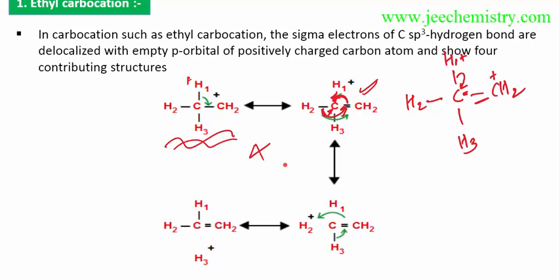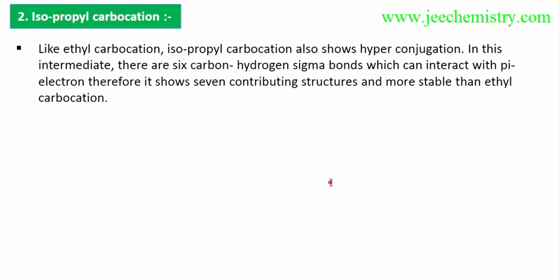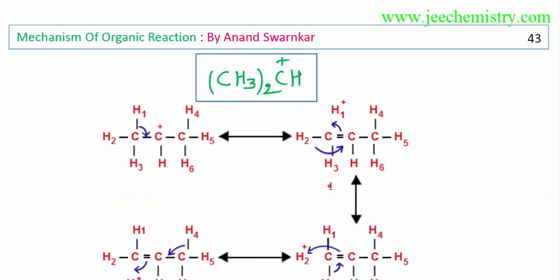Now, isopropyl carbocation. This is the isopropyl carbocation — one, two, three, four, five, six — total six hydrogens are here. So six hyperconjugating structures will be formed, and one will be the aliphatic structure. Total seven hyperconjugating structures will be there.